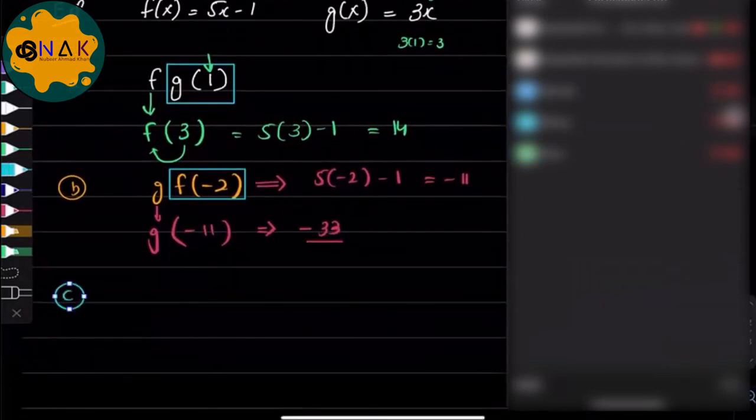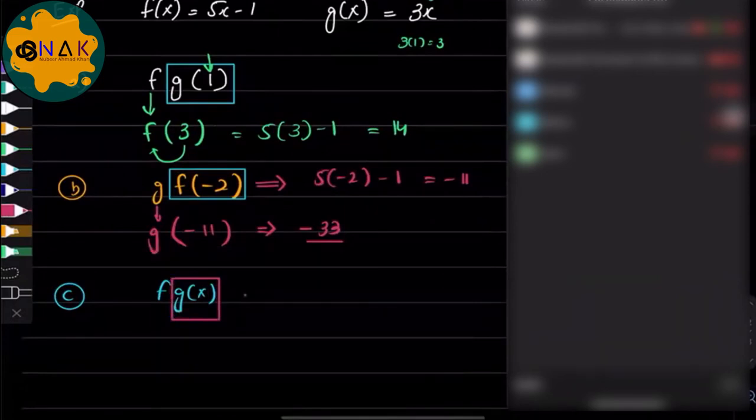Let's try this one: f(g(x)). How do we do this one? There is no value, there is no input actually for this one. So how do we solve this one? What you have to do, I would make a box something like this: g(x). What was g(x)? 3x.